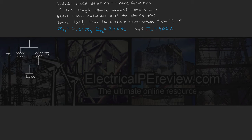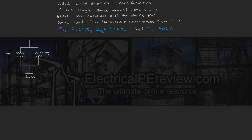If two single-phase transformers with equal turns ratio are used to share the same load, find the current contribution from transformer 1. The impedance of transformer 1 is 4.61%, the impedance of transformer 2 is 7.26%, and the load current is 900 amps.